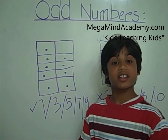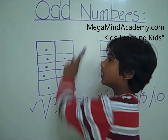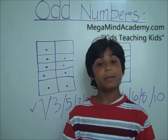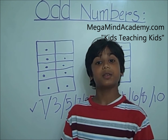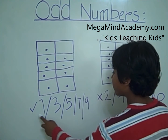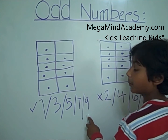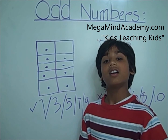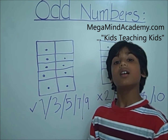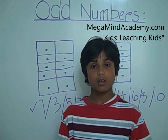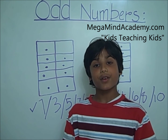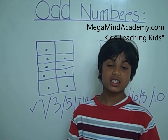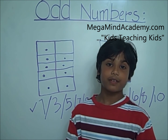Today we learned about odd numbers. Odd numbers are the numbers that cannot be equally divided into groups of two. We learned also that one, three, five, seven, nine are odd numbers. And the numbers that end with one, three, five, seven, or nine are odd numbers — like eleven, thirty-one, fifty-nine, sixty-seven, or fifty-five.